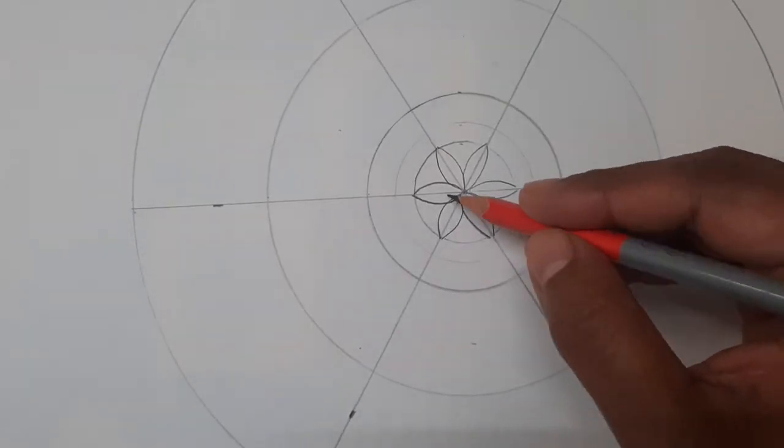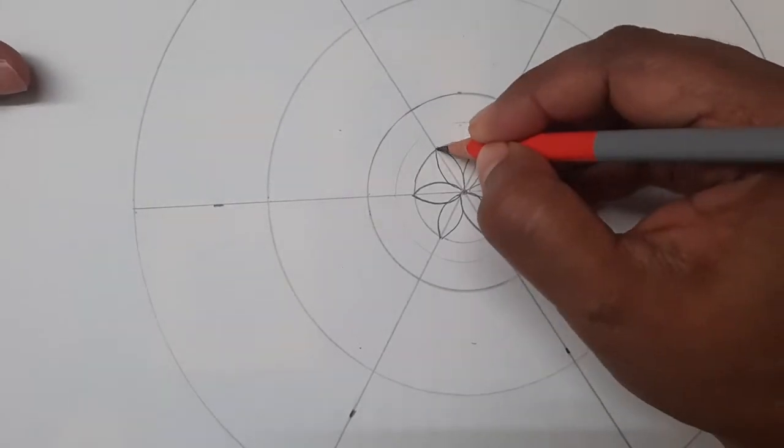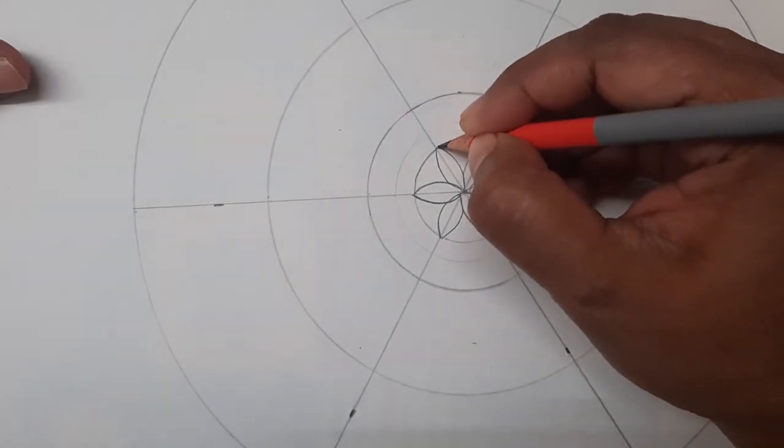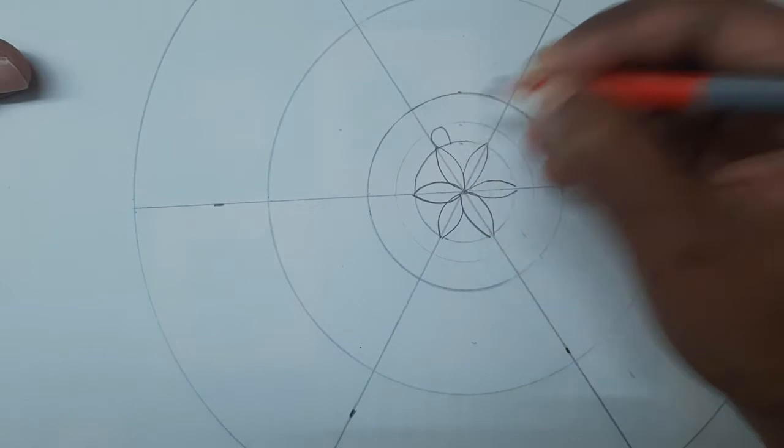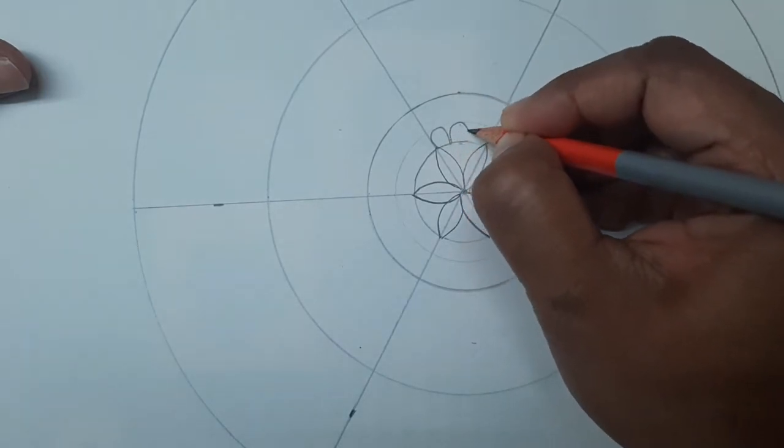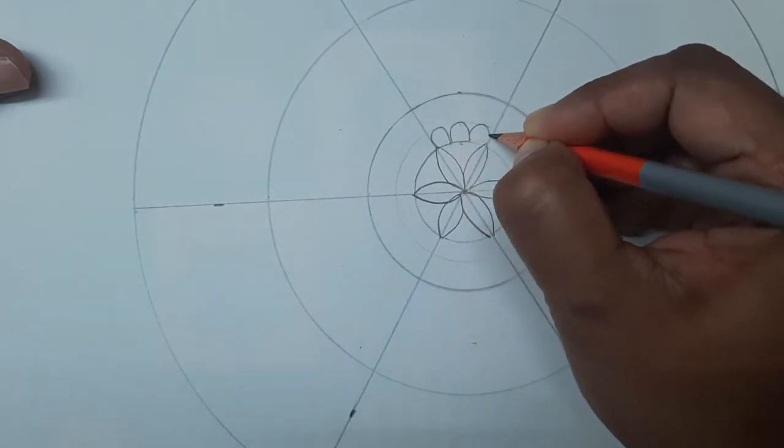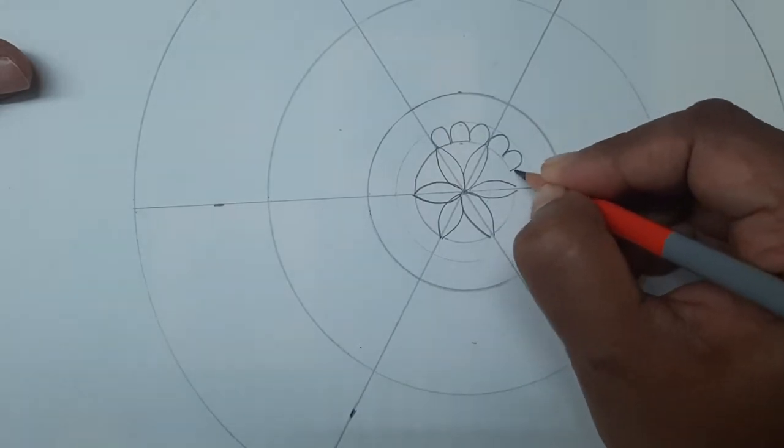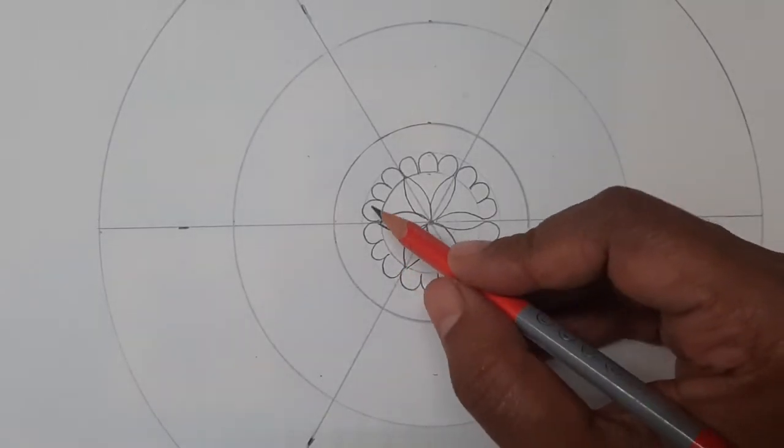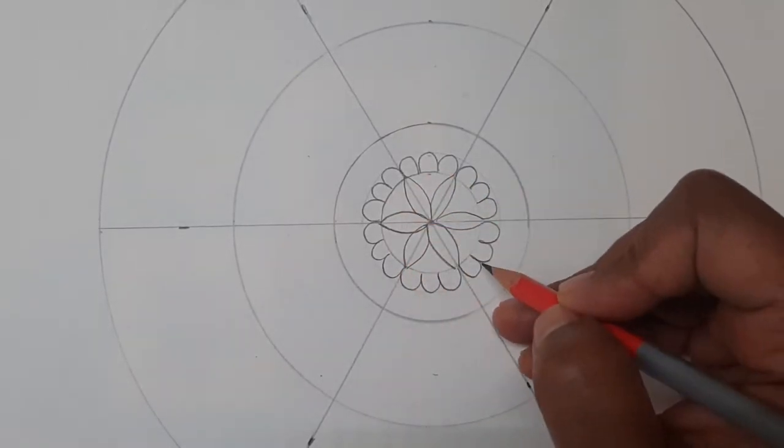So this circle is complete. Now I'm drawing a very simple pattern in the next circle too: three petals in every grid. This is how it looks once you complete the second circle.